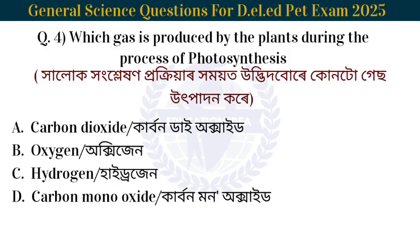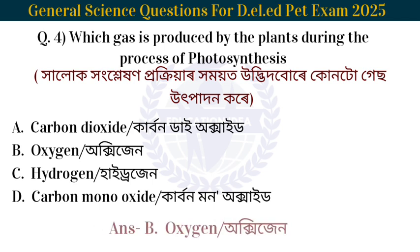Next question: Which gas is produced by plants during the process of photosynthesis? Plants can produce oxygen gas.